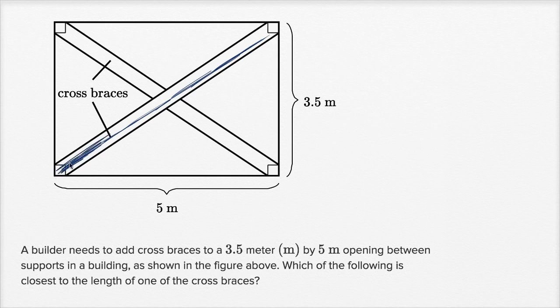If you look at the cross brace that I have started to shade in here in navy blue, and then you look at this five meter side, and then this 3.5 meter side, you see that they form a right triangle.